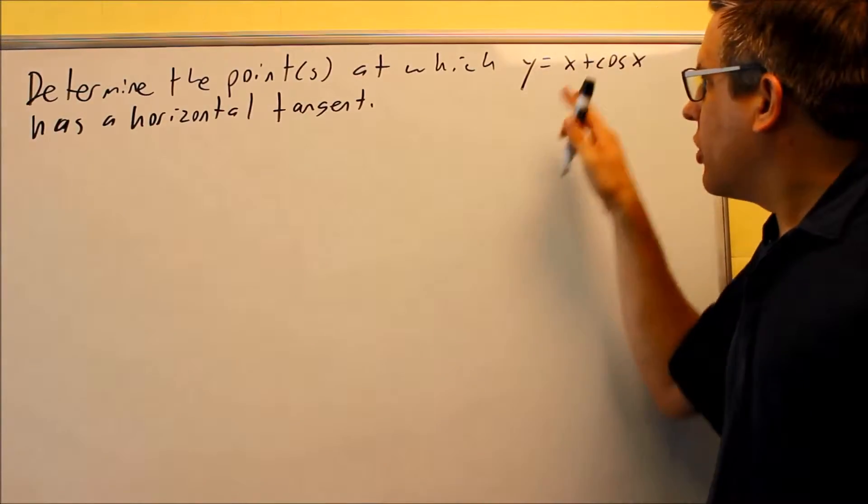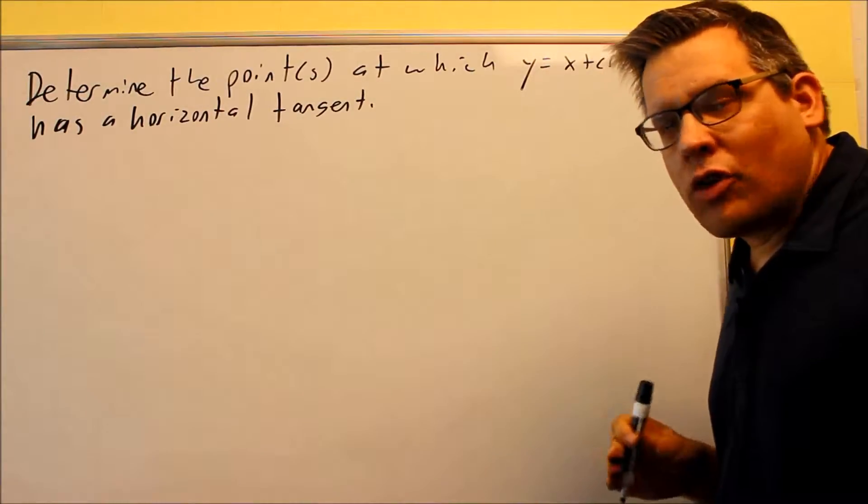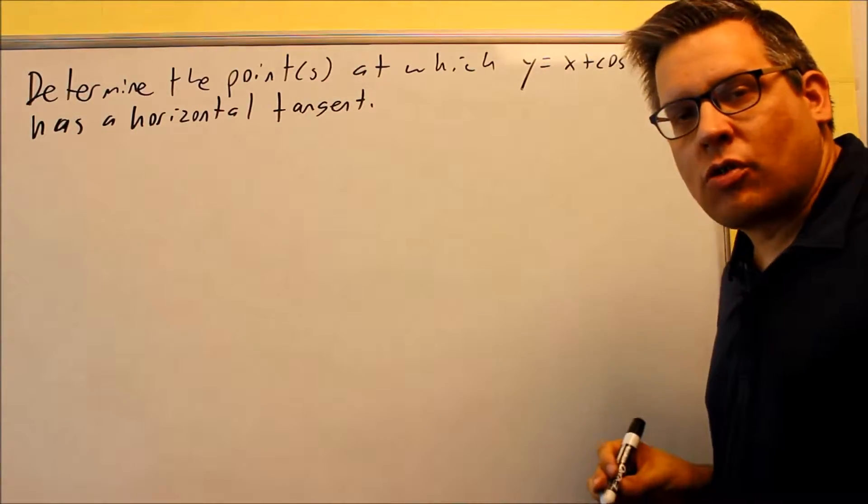What we're going to do is take the first derivative, set it equal to zero, and solve for it. That allows us to find the point at which there's a horizontal tangent.